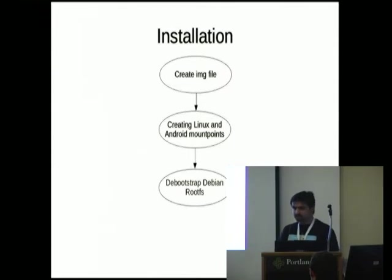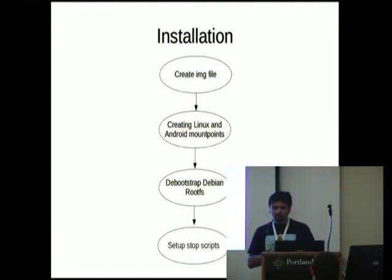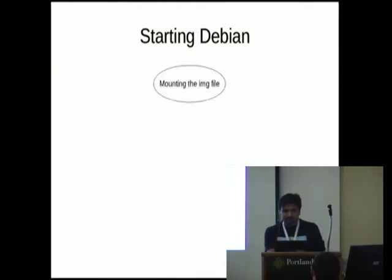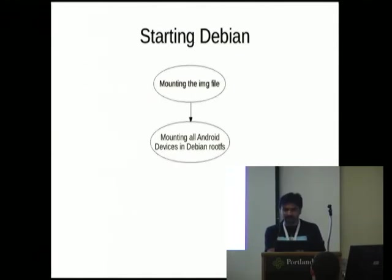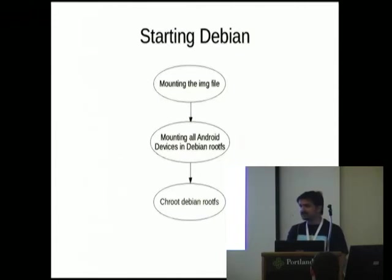We set up stop scripts because if Debian tries to halt the system it sends a halt signal to Android too, which would shut down Android. So stop scripts must stop only Debian services, not Android services. For starting: mount the image file, mount all Android devices into Debian, then chroot and start the basic services needed.